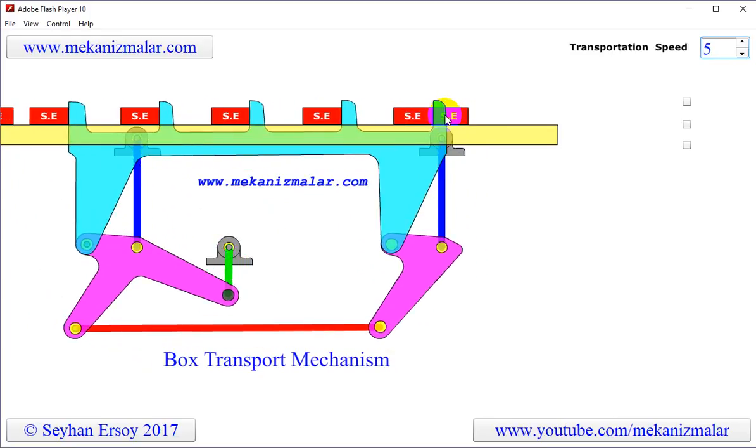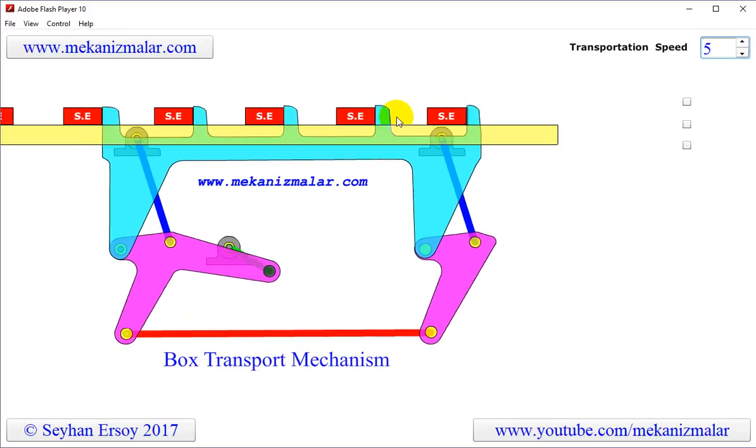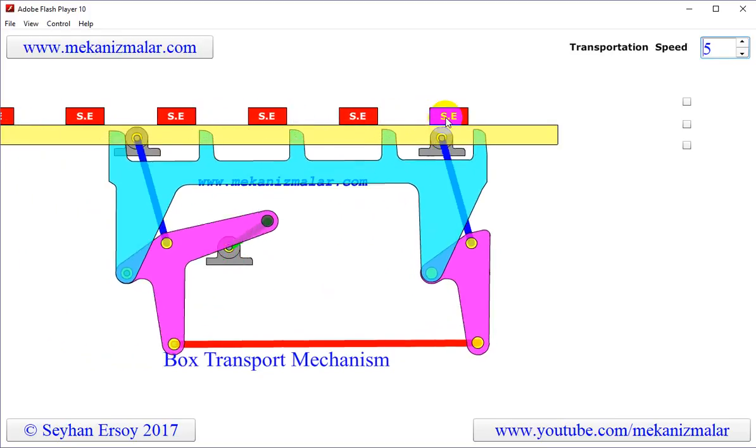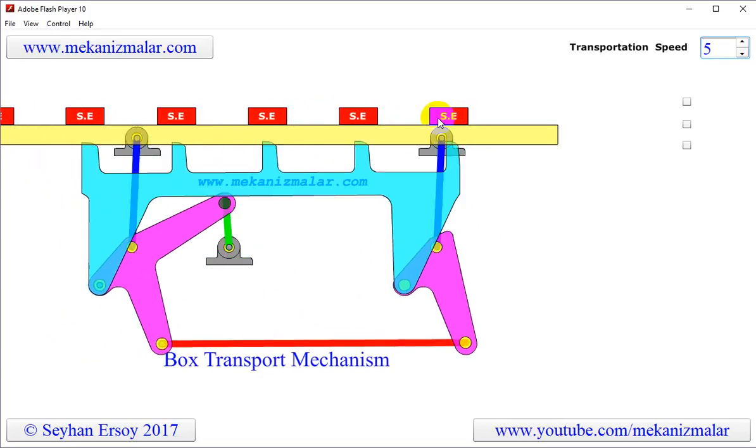The transport mechanism transfers the boxes to the new position for processing purposes. There are four stations here.